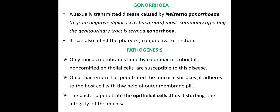Gonorrhea is caused by a gram-negative diplococcus bacterium and is classified as a sexually transmitted disease. The bacteria can be found in the genitalia. Non-cornified epithelial cells are susceptible to this disease. Once the bacterium has penetrated the mucosal surface, it adheres to the host cell with the help of outer membrane pili.